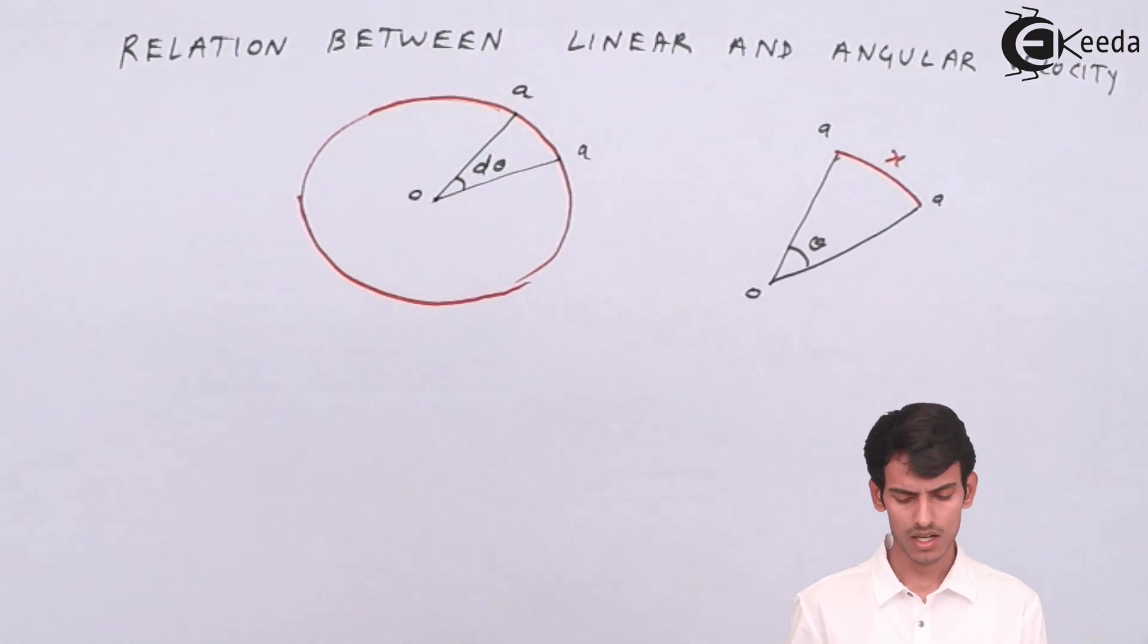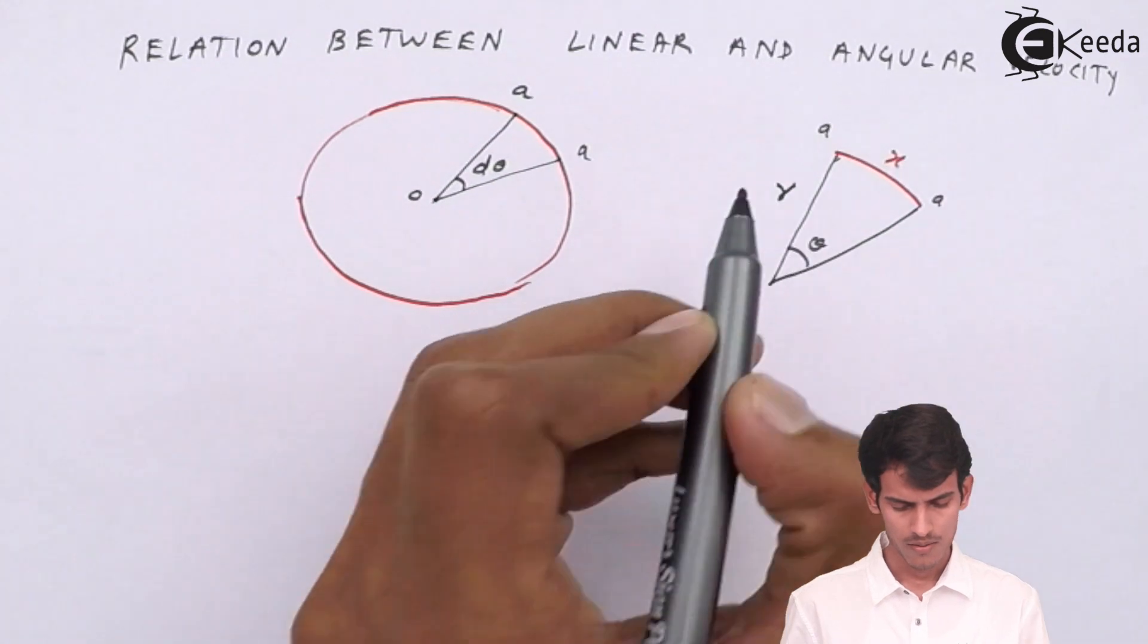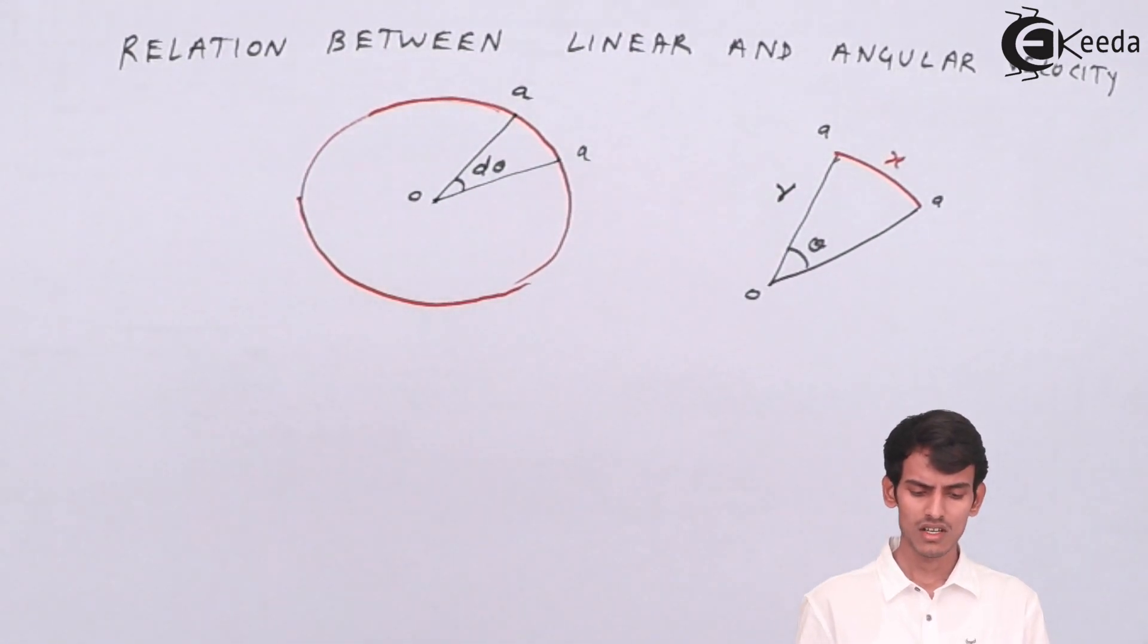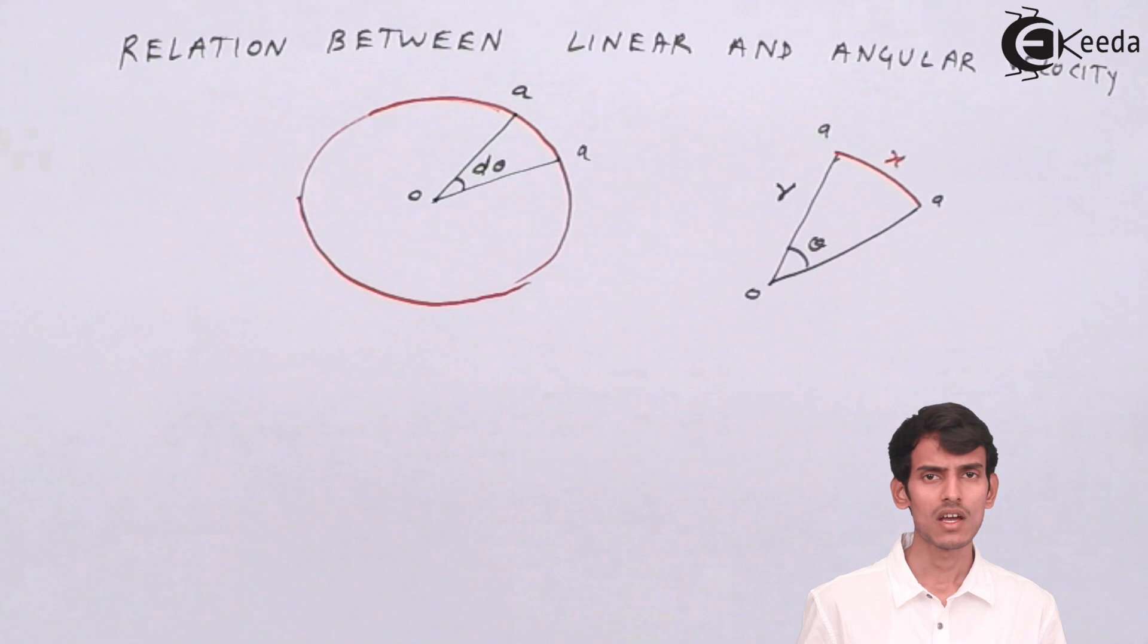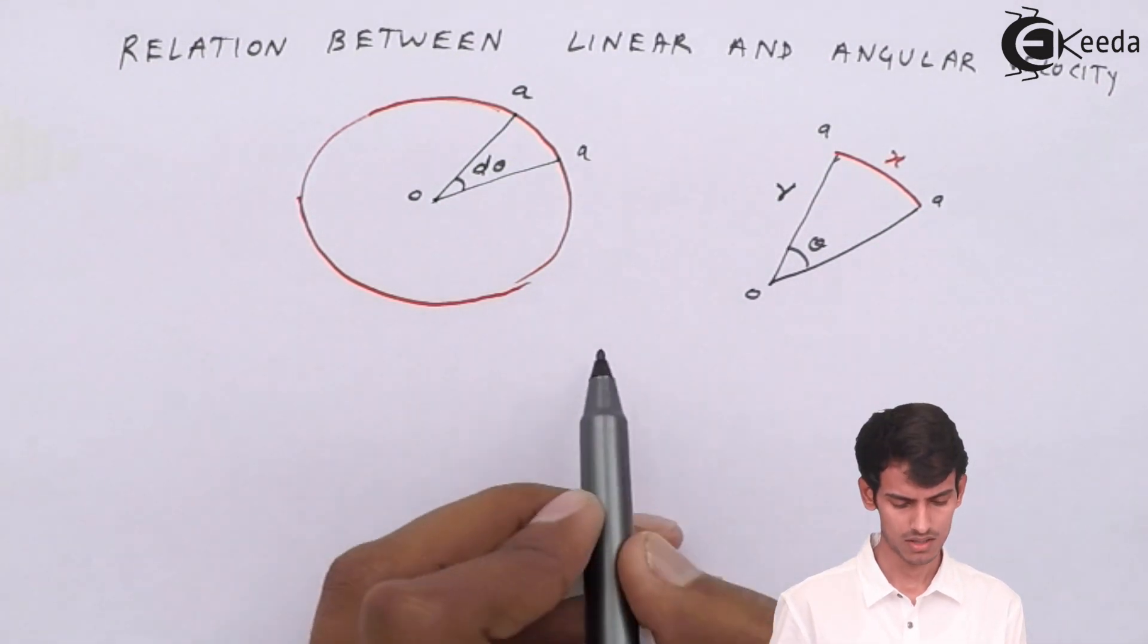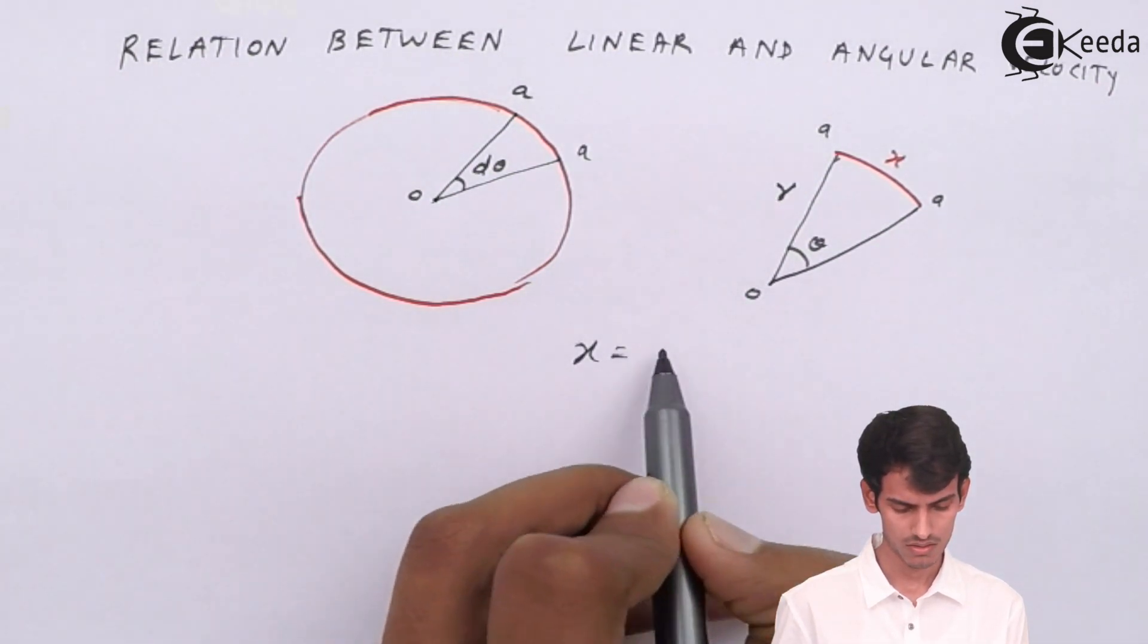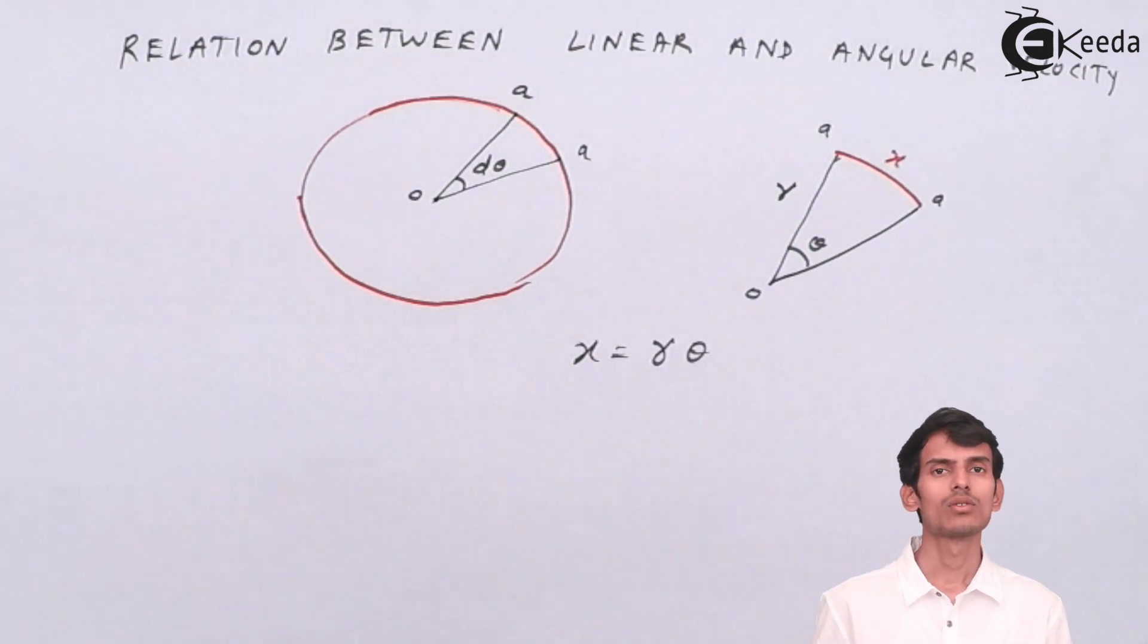And let the radius of the circle be r. So we have three things here. We have x, that is the arc of a circle which is almost a line since it is very small. We have r, the radius of the circle, and we have theta. Now these three variables are related to each other. From geometry we can write x is equal to r times theta.